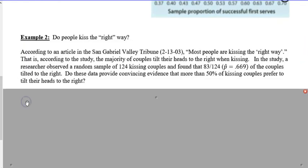Example 2: Do people kiss the right way? Right is in parenthesis. According to this article in the San Gabriel Valley Tribune, which is the real one, both people are kissing the right way. That's according to the study, the majority of couples tilt their head to the right when kissing. In the study, a researcher observed a random sample of 124 kissing couples. Is that creepy? And found that 83 out of 124, 0.669, 67% of the couples tilted their head to the right.